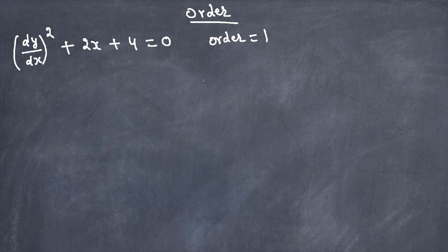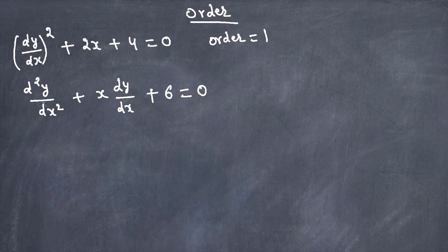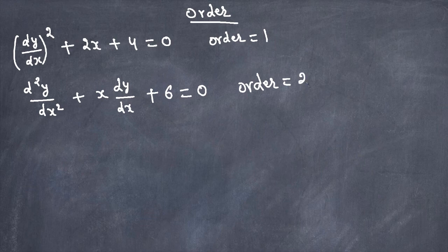If it's a second derivative, order is 2. For example, take d²y/dx² plus x·dy/dx plus 6 equals 0. The order of this differential equation is the order of the highest differential coefficient. Here we have d²y/dx², which is a second derivative, so the order is 2. If it's a third derivative, the order is 3.